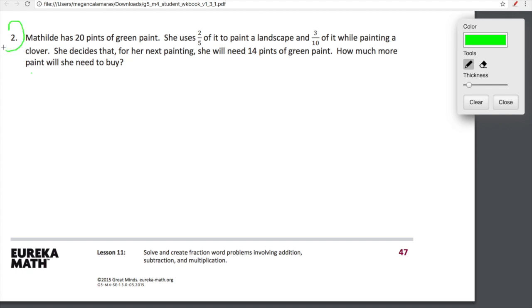To get us started here, we're working on our problem set. This is number two. Let's read the problem first and really try to understand what's happening before we even start doing any calculations. Matildi has 20 pints of green paint. She uses two fifths of it to paint a landscape and three tenths of it while painting a clover. She decides that for her next painting she will need 14 pints of green paint. How much more paint will she need to buy?